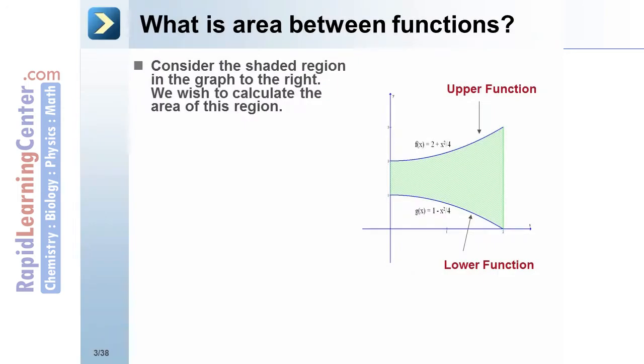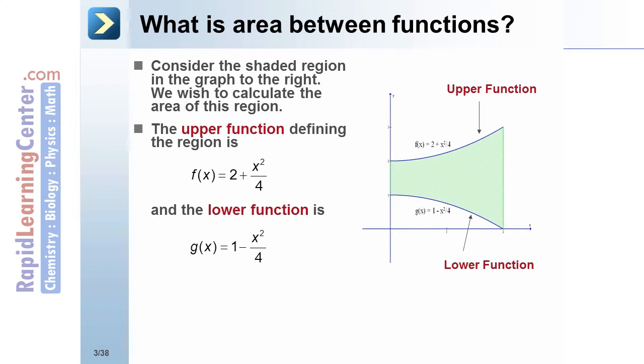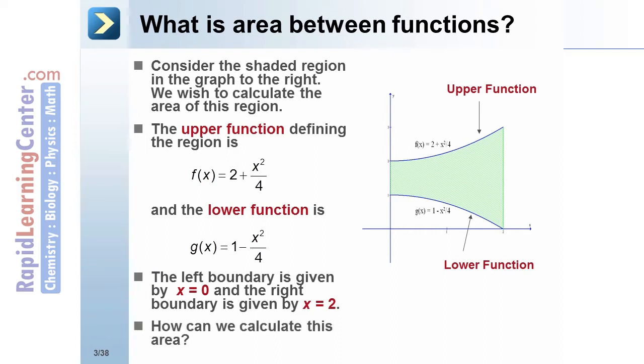What is area between functions? Consider the shaded region in the graph to the right. We wish to calculate the area of this region. The upper function defining the region is f(x) = 2 + x²/4, and the lower function is g(x) = 1 - x²/4. The left boundary is given by x = 0 and the right boundary is given by x = 2. How can we calculate this area?